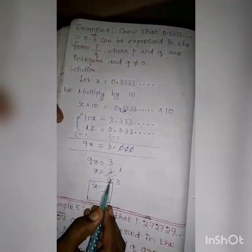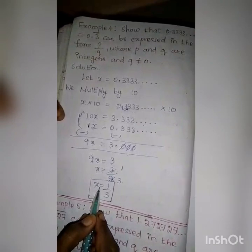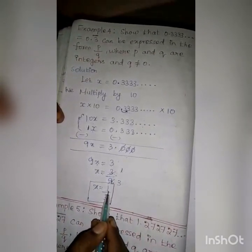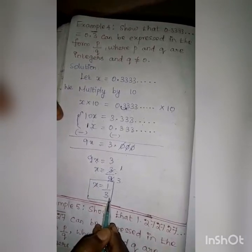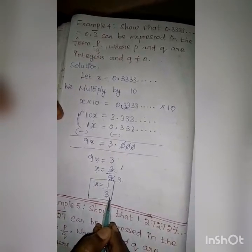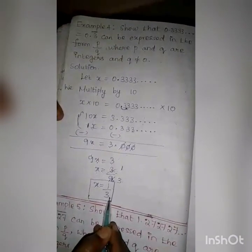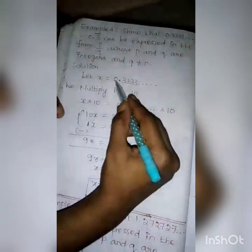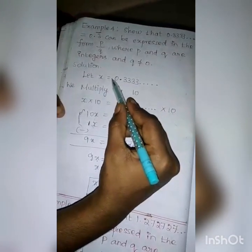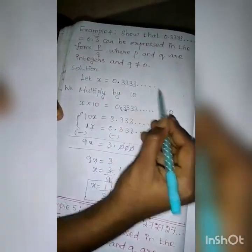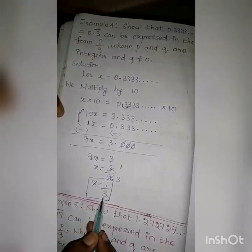So X equal to 3 by 9 can be written as 1 by 3. So X equal to 1 by 3. Here, 1 by 3 is in the form of P by Q, where P and Q are integers and Q not equal to 0. You can verify: divide 1 by 3 and you get 0.3333 etc. So the decimal form can be written as X equal to 1 by 3.